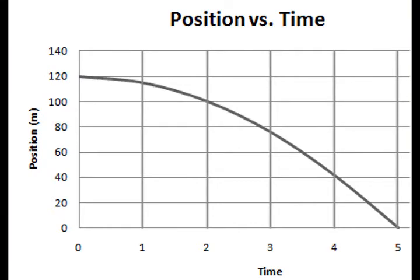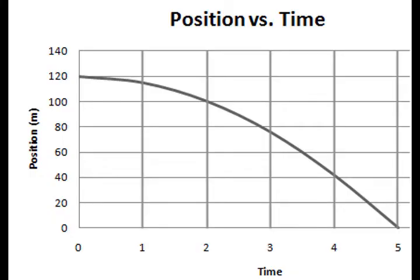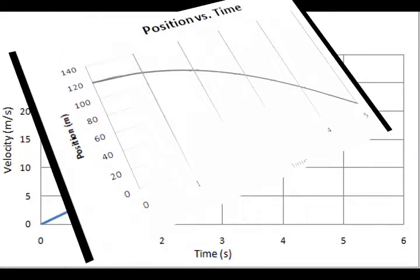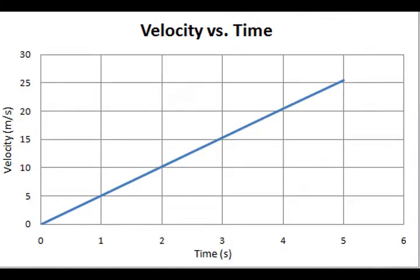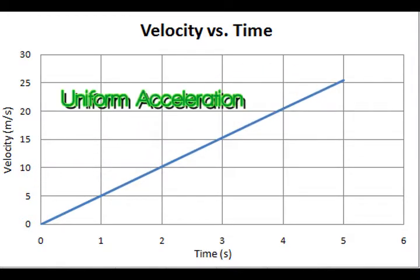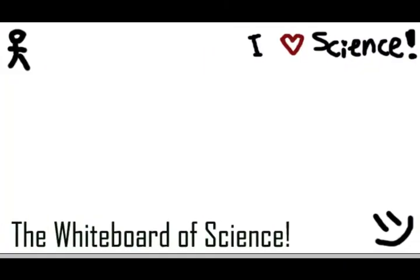Before we get into the calculations, let's take a look at the position versus time graph and also the velocity versus time graph. These graphs are based on a ski jumper coming down the in-run. For the position versus time graph, the reference is set to the bottom of the hill, and since the height of the hill is 120 meters, the initial height will be 120 meters. This graph shows the velocity of a jumper during an in-run. The initial velocity is zero and the final velocity is 25 meters per second, or 90 kilometers per hour. The slope of the graph is a straight line, which means that the ski jumper has a uniform acceleration.